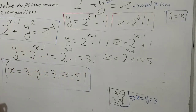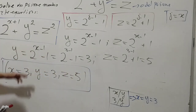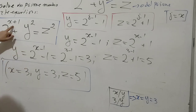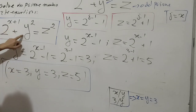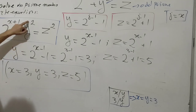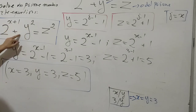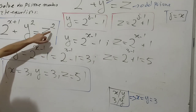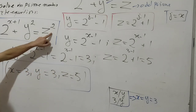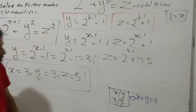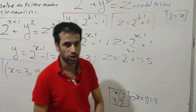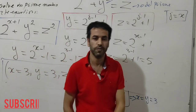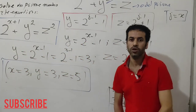We can verify: replacing x = 3 gives 2^4 = 16, y² = 3² = 9, and 9 + 16 = 25 = 5² = z². The equation holds, confirming this is the only solution.